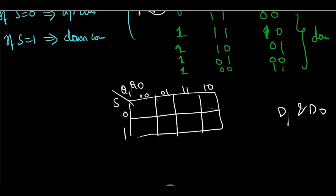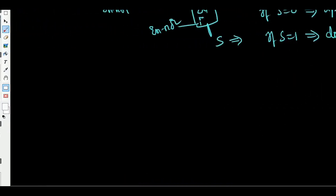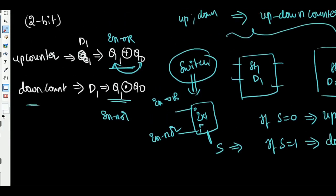So instead of doing all those, one of the efficient way to do is by using this procedure that is by taking a switch circuit. This is one of the most efficient way and easiest way to design an up-down counter.